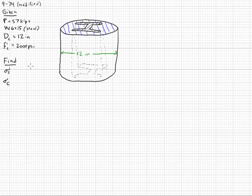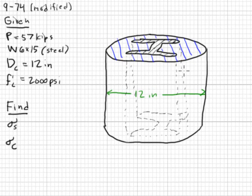Problem 974 gives us a short column in compression. It is a 12 inch diameter concrete cylinder with a steel W shape, wide flange shape, 6 by 15, right down the middle.